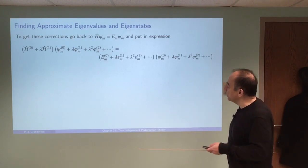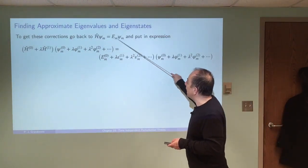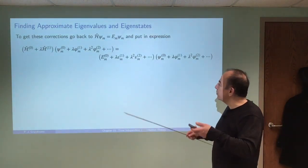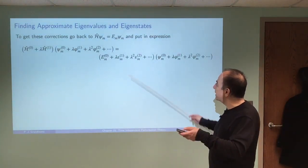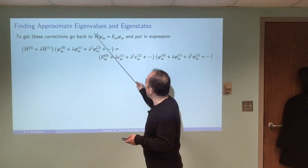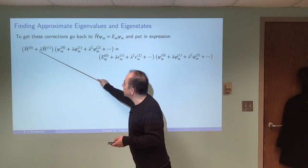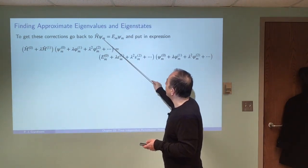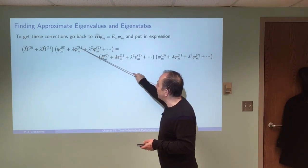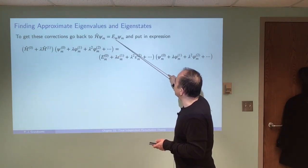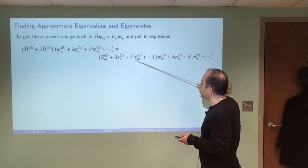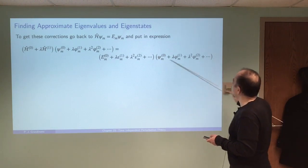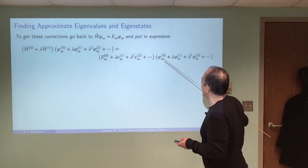Let's take a look at how we solve this. We're going to take the Schrödinger equation H psi equals E psi and plug all of our expansions into it. Here's H: our main Hamiltonian plus the perturbation — that's the total. For psi we put in our full expansion, and for the energy eigenvalue we put in our energy expansion. So psi shows up on both sides.